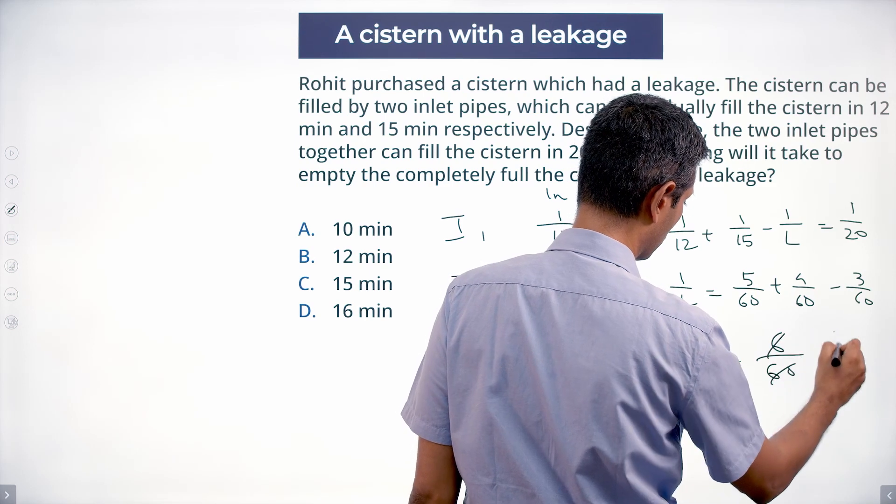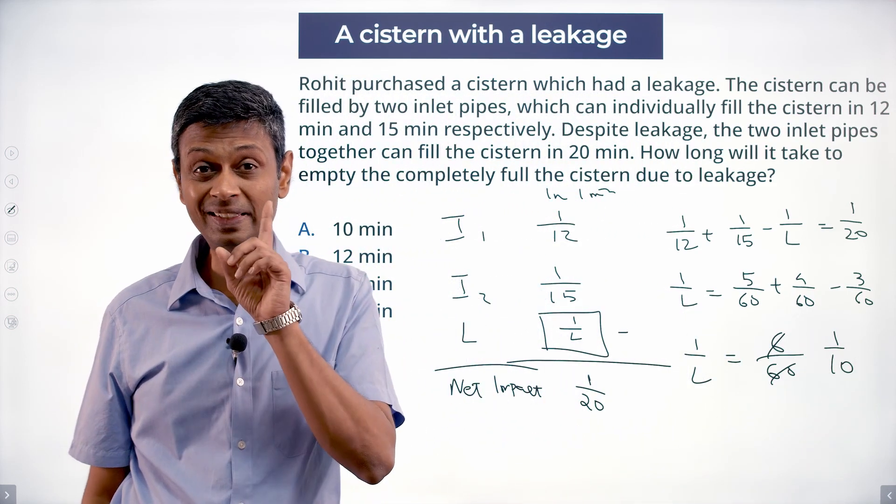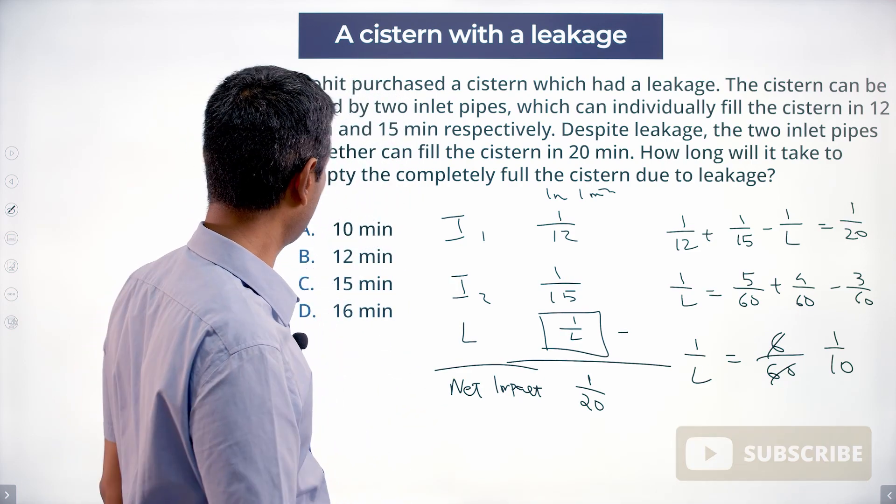six by sixty, or one by ten. So the leak pipe leaks one tenth in each minute, or it'll take ten minutes to drain the entire tank.